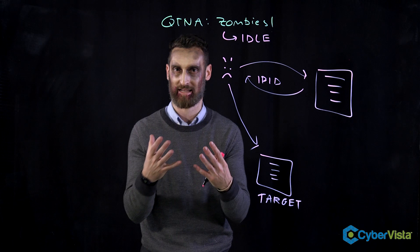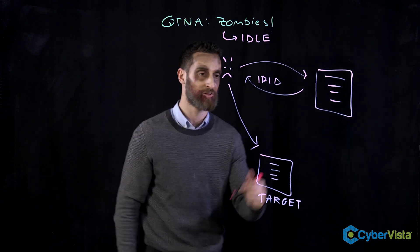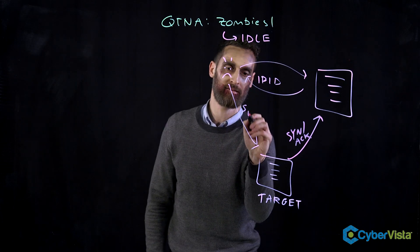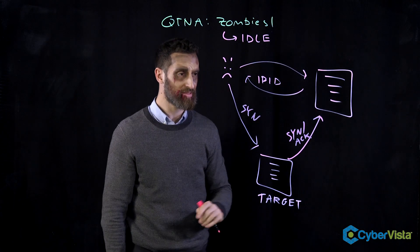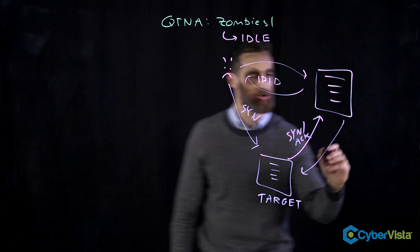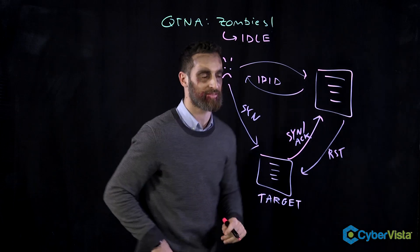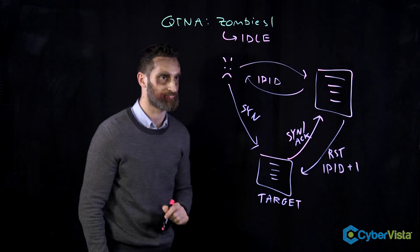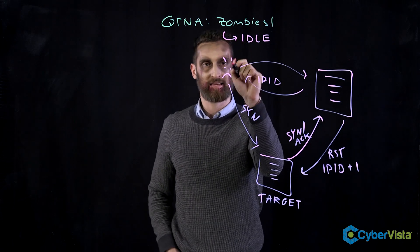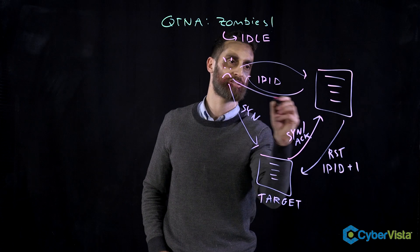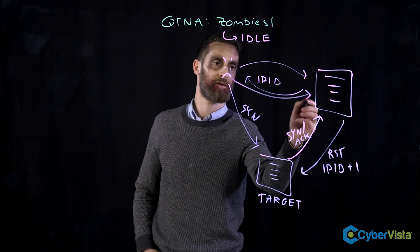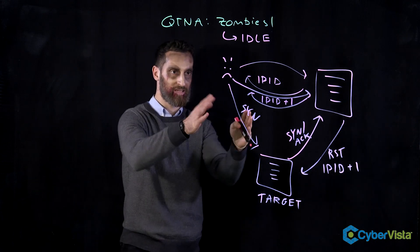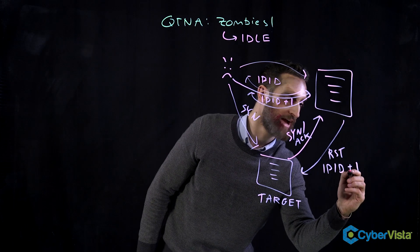If the target receives a SYN packet and the port is open, it responds with a SYN-ACK — the next step in a three-way handshake — and it sends that SYN-ACK to the zombie. The zombie receives this unexpected SYN-ACK and responds with its own RST (reset) back to the target. Here's the key: when the zombie sends that RST, its IP ID increments by one. Then when we as the attacker solicit another response from the zombie, the IP ID increments by one again.